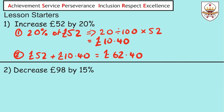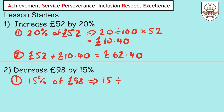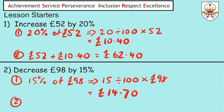Let's look at question number two. This time we're going to decrease £98 by 15%. Part one: find 15% of £98 — that's 15 divided by 100, times by £98 — gives us £14.70. For part two, we're going to take the original amount of money, £98, and this time we're decreasing it by 15%, so we're going to subtract £14.70, which gives us £83.30.